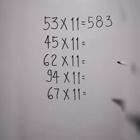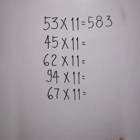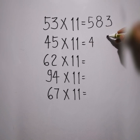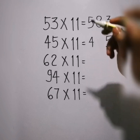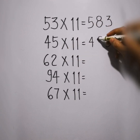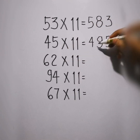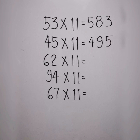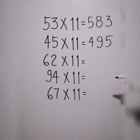So next is 45 times 11. Write 4, put a space in between, write 5. Add 4 and 5, that is 9. So the answer is 45 times 11 is equal to 495. You can check with your calculators if what we're showing here is correct.